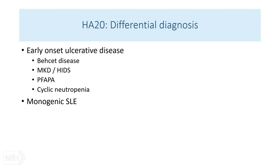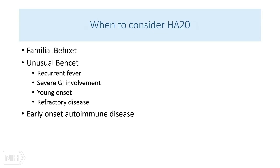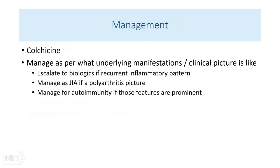The key differential diagnosis includes diseases that give early-onset ulcerative disease: Behçet's, mevalonate kinase deficiency or hyper-IgD syndrome, PFAPA, and cyclic neutropenia. Because some patients present with typical autoimmunity, I would also include monogenic lupus. Consider HA20 if you have familial Behçet's, unusual or hard-to-treat Behçet's, Behçet's associated with recurrent fever, severe GI involvement, young onset, or very early-onset autoimmune disease.